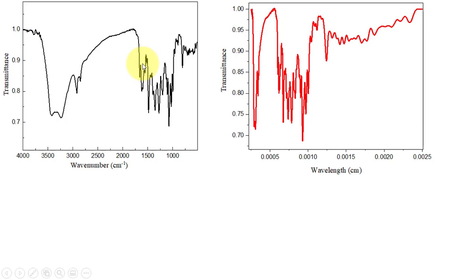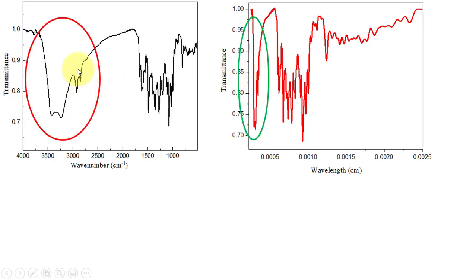Peaks that are broad and well-separated in wave number become collapsed in the wavelength plot. Peaks that are clearly visible and readable in wave number are not visible when plotted in wavelength in centimeters. This shows that plotting IR spectra in wave number resolves closely spaced peaks — this is the key benefit.